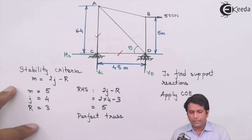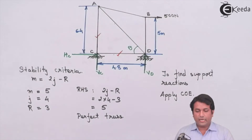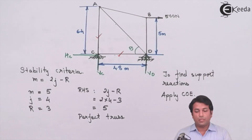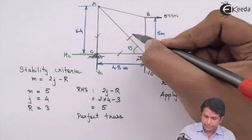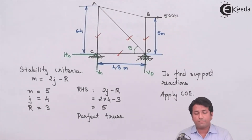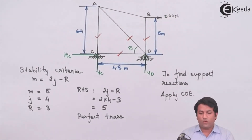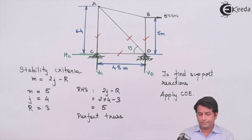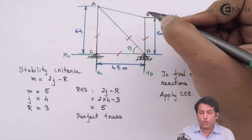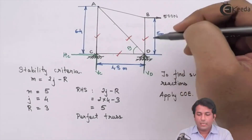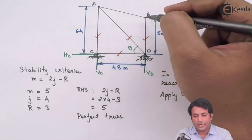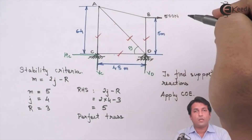Coming back to the original figure, I have now calculated the force in member AD and the force in member BD. The only force remaining is in member AB, so I will take joint B. At joint B, I know the force in member BD but not the force in member AB, and since it is an inclined force I need to find its angle.